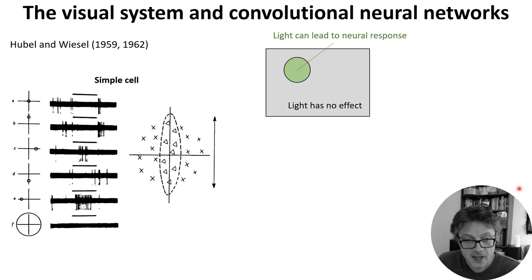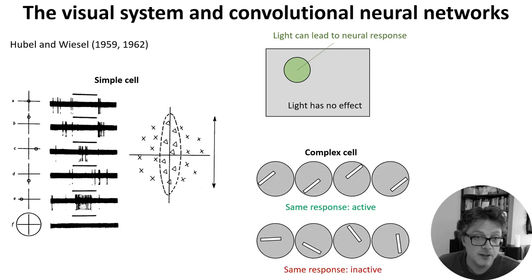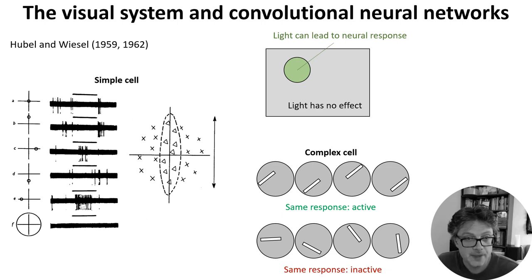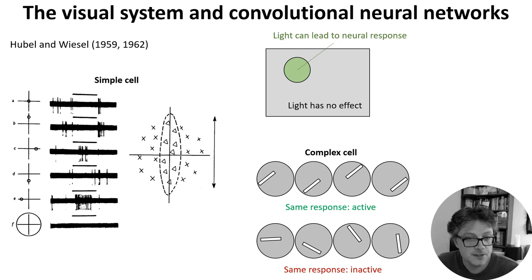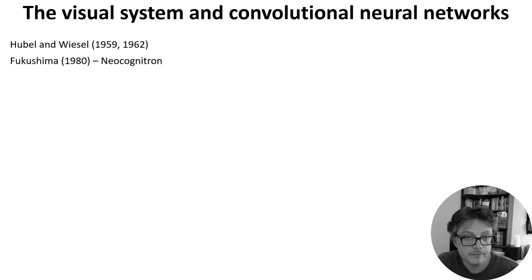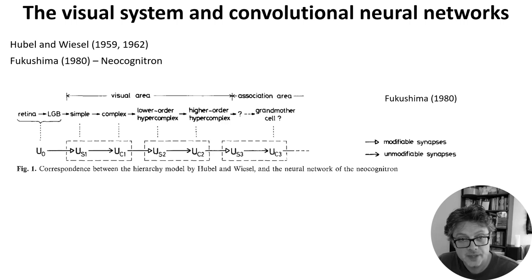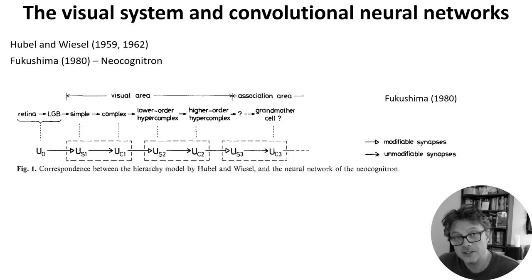Here you can see one example from their recordings: shining a light where the X's are causes the cell to be more active, and shining it where the little diamonds are causes it to be less active. They also found complex cells — these were defined to be any cell that wasn't simple, but in many cases they had the property of responding to a bar of light with a preferred orientation but didn't mind where in their receptive field the bar was shown. If you know about how convolutional neural networks work, this probably doesn't really surprise you — you can think of simple and complex cells as being roughly like convolutional layers and pooling layers. The simple and complex cell structure was the direct inspiration for Fukushima's 1980 neocognitron, an explicit computational model inspired by Hubel and Wiesel, featuring alternating S and C layers corresponding to simple and complex cells. The network was trained by a bespoke unsupervised learning rule that I won't go into here.